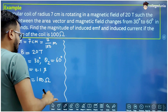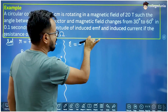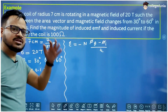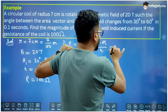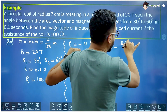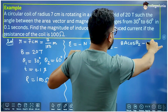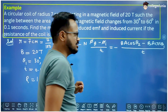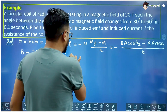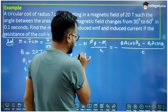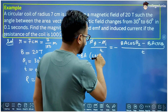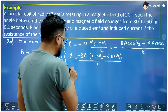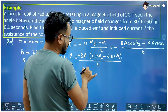Now let us apply the formula. The formula is E = N·(phi_final − phi_initial) / T. Since there is no mention of number of turns, we take N = 1. The final flux is B·A·cosθ₂ and the initial flux is B·A·cosθ₁, because neither B nor A are changing — only the angle is changing. So B and A are constant; taking them common, we are left with E = B·A·(cosθ₂ − cosθ₁) / T.